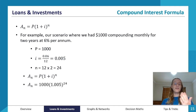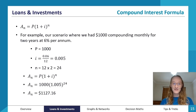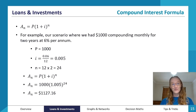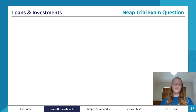We substitute in the values for p, i, and n, put it into our calculator, and we get the same answer we got when we used recursion. This was a much quicker process than applying the same rule 24 times. That is the beauty of the compound interest formula.